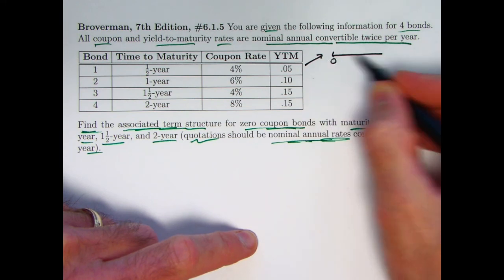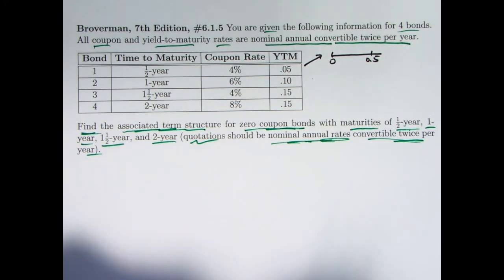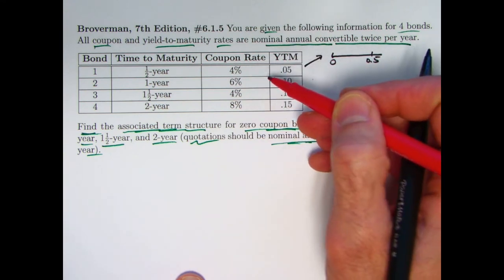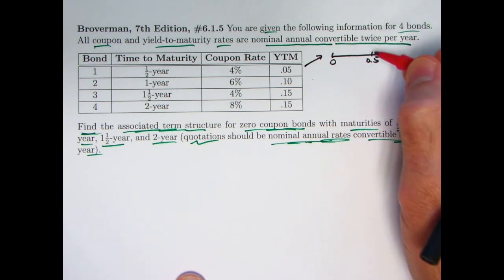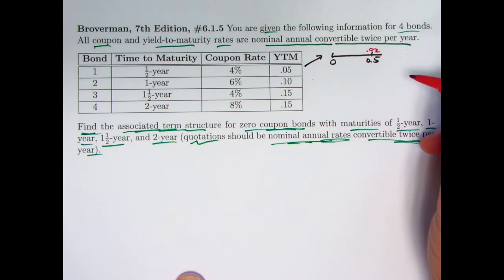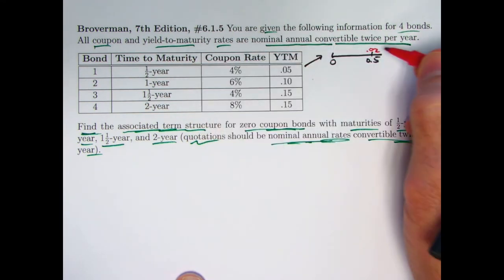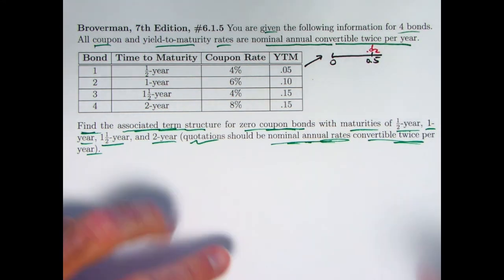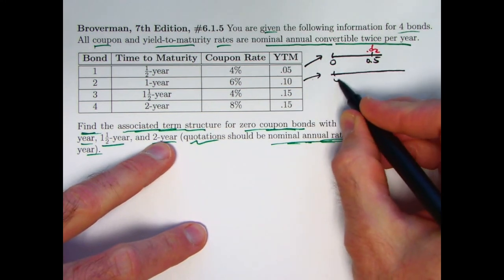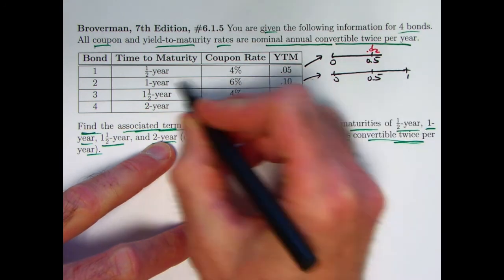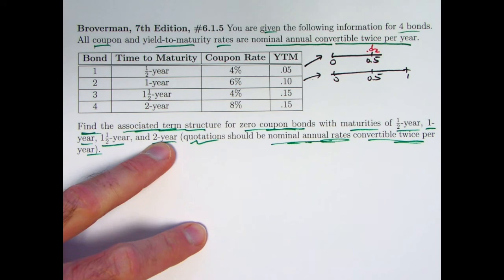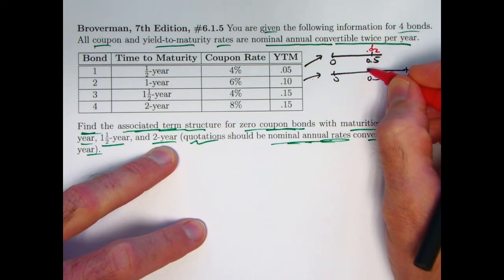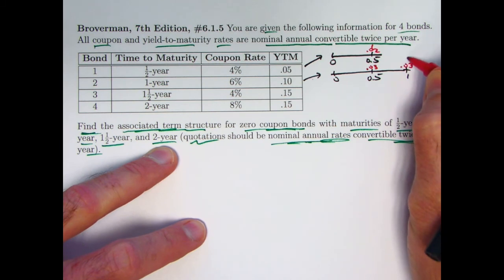For the first bond, time zero to time 0.5 — it's a one-half year bond. The coupon rate is 4% as a nominal annual rate, so 2% is the effective semi-annual coupon rate. 2% of 1 is 0.02, plus the redemption amount of 1, so altogether we're getting 1.02 at time 0.5. For the next one, the one-year bond: time 0, 0.5, and 1. The coupon rate as a nominal annual rate is 6%, so as an effective semi-annual rate it's 3%. I get a coupon of 0.03 at each period, plus a redemption amount of 1.